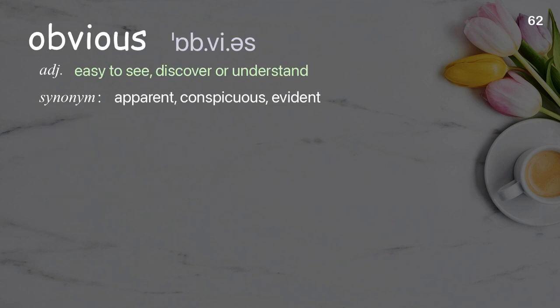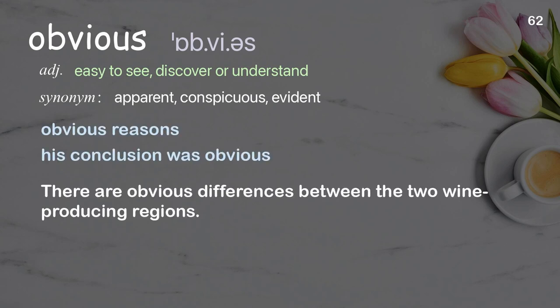Obvious: easy to see, discover, or understand. Examples: obvious reasons, his conclusion was obvious. There are obvious differences between the two wine-producing regions.